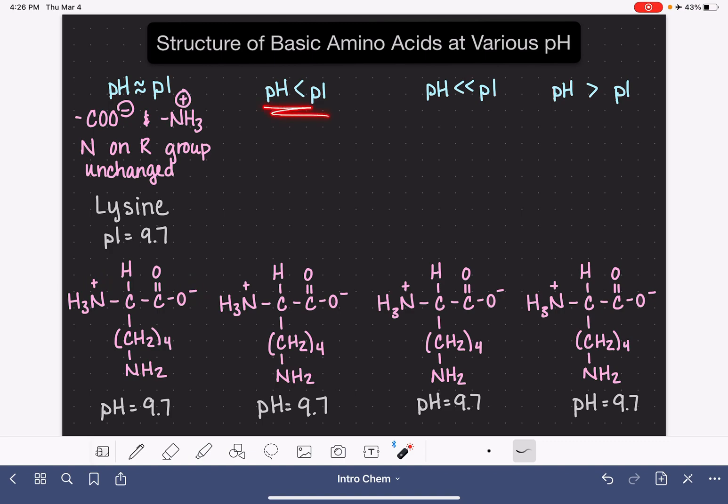Now what would happen if we lowered the pH value? So instead of having this in a pH of 9.7, let's lower its pH down to, let's say, 6. When the pH drops, we know from previous examples that that's going to have an effect on the carboxylic acid group. So instead of existing as a COO-, this is going to be a COOH with no charge at all. So we will have COOH, and we will also have our amino group existing as NH3+.